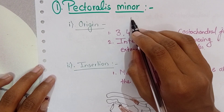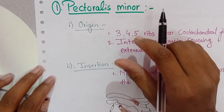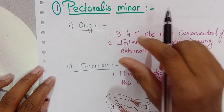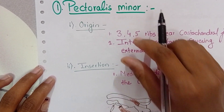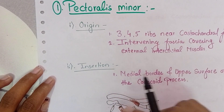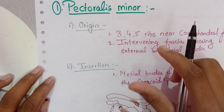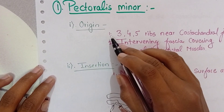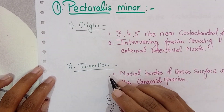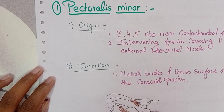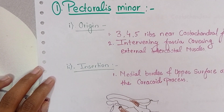What we have to write — if a particular muscle is given, then under what headings we have to write that muscle — is the origin, insertion, nerve supply, and action.